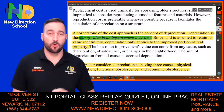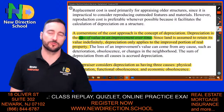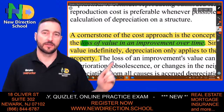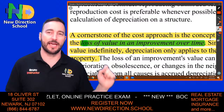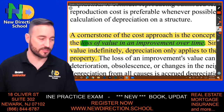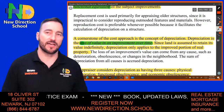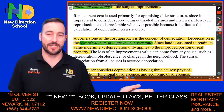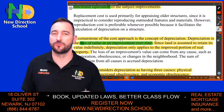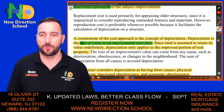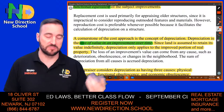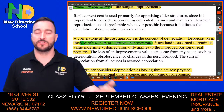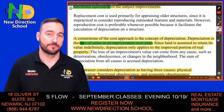A cornerstone of the construction approach is the concept of depreciation. Depreciation is loss of value in any improvement over time. Since land is assumed to retain its value indefinitely, land does not depreciate. The depreciation only applies to the improved portion of the real property — the building. The building over time needs maintenance, needs things to be replaced, so it depreciates. It's just like your car: once you leave the dealer and start using it, the value starts to decline.